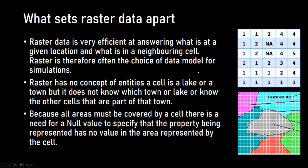There is a drawback to raster data: it has no concept of objects. A cell can know it is a lake, and another area could be a town, but it doesn't know which lake or which town. The cells don't know they all belong together into one object — they know they are lakes but not that they are one specific lake. Without this object concept, we can't say how big a lake is or assign it a name. You can do tricks linking raster to database tables, but that loses some of the efficiency — and the main reason for using raster is its extreme efficiency from its homogeneous data structure.